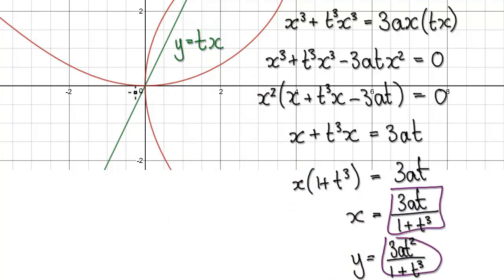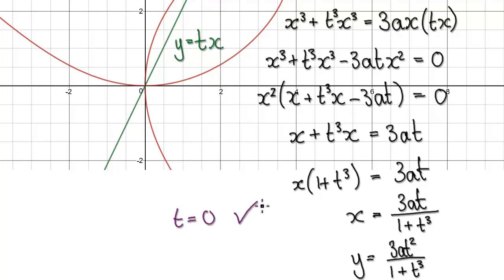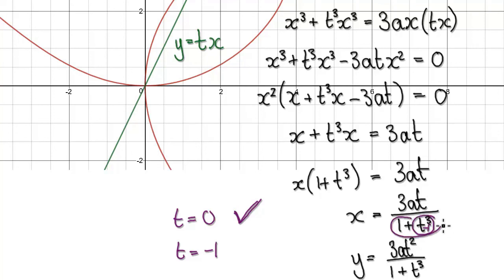When T equals 0, it describes the dots. So the domain for our parametric equations: we can have T equals 0 — even though the straight line breaks down, we don't care about the straight line, T equals 0 still works. But T cannot be negative 1, because that makes the denominator 0, so we'd be dividing by 0. T cannot be negative 1, but T can be 0.